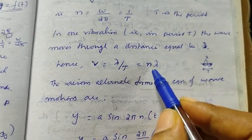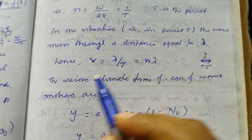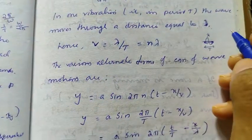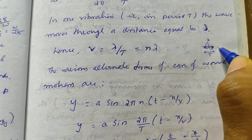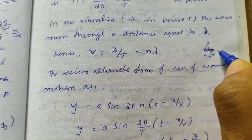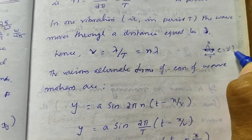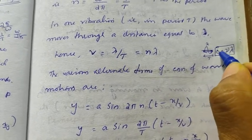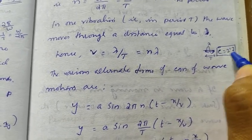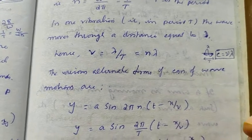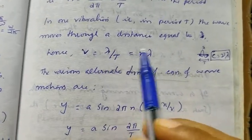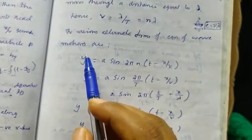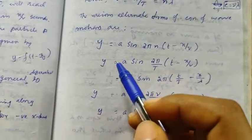Since 1/T equals frequency n, we get v = nλ. This is a very famous equation, studied in various forms such as c = νλ, where c is the velocity of light or the velocity of the wave, ν is the frequency, and λ is the wavelength.